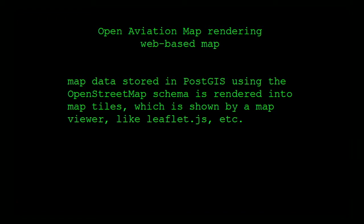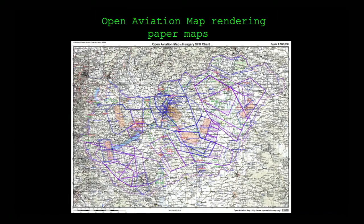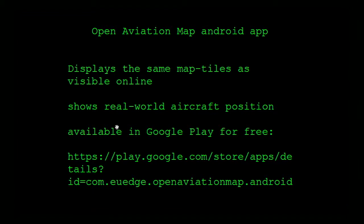So what we can do with rendering: we can render web-based maps which you can use. This is a shrunk-down screenshot of one of the paper maps — if you print it, it's this big and you can take it with you. And then we have an Android app, and I'm going to show you a small video about what our Android app does.